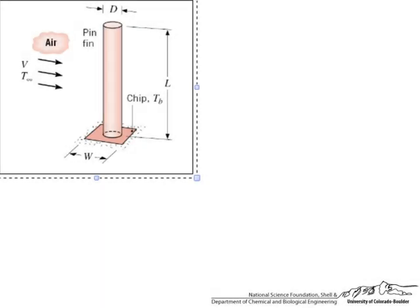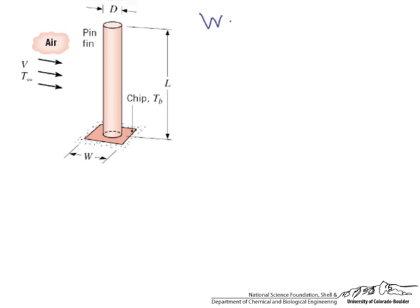This is a silicon chip. It has a width of 4 millimeters on a side, and to enhance the heat transfer we have a copper pin fin that is brazed to the surface. The pin length is 12 millimeters and the diameter is 2 millimeters.